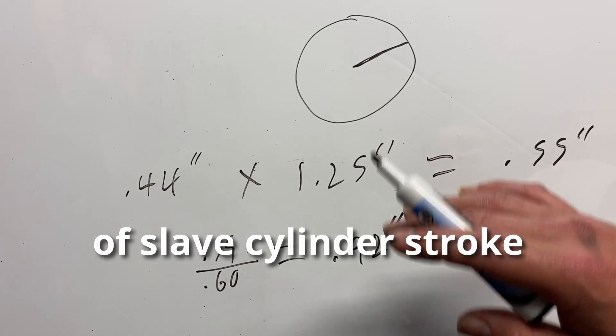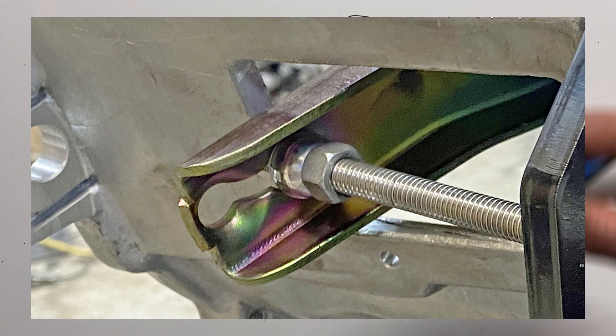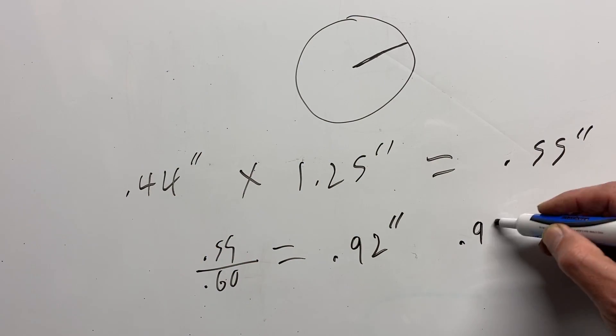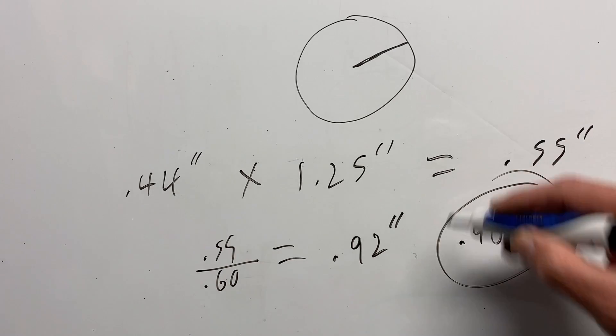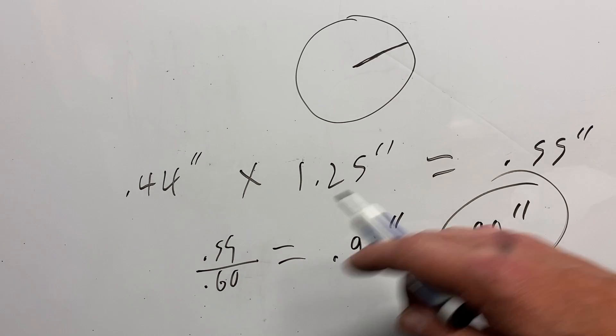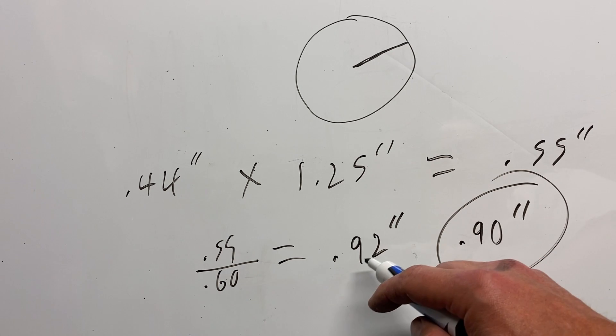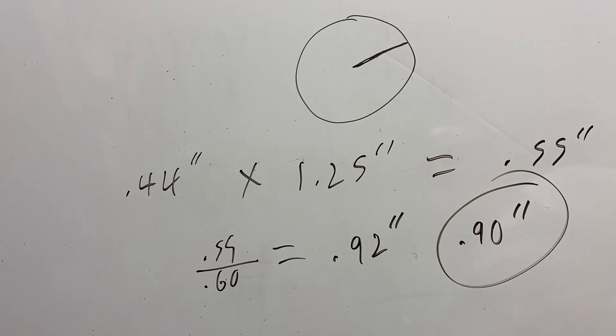And because I use the inner hole on the clutch fork instead of the hole that the cable was designed to go in, 0.90 inches is all that's required to actuate the clutch. So with a 3 quarter inch slave cylinder with 1.25 inches of stroke, we have enough stroke to actuate the clutch.